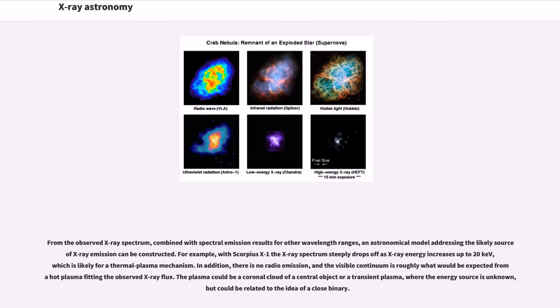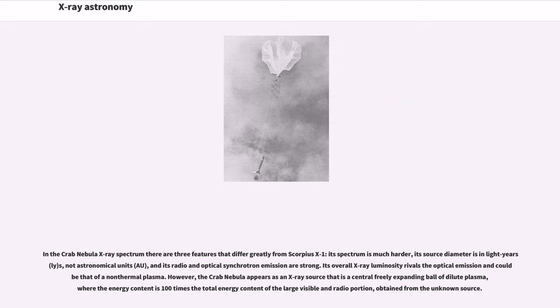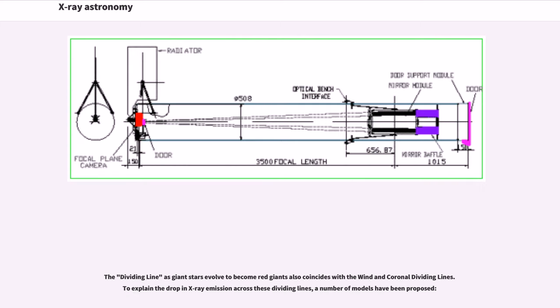With Scorpius X-1 the X-ray spectrum steeply drops off as X-ray energy increases up to 20 kiloelectron volts, which is likely for a thermal plasma mechanism. The plasma could be a coronal cloud of a central object or a transient plasma, where the energy source could be related to the idea of a close binary. In the Crab Nebula X-ray spectrum there are three features that differ greatly from Scorpius X-1: its spectrum is much harder, its source diameter is in light years not astronomical units, and its radio and optical synchrotron emission are strong. The Crab Nebula appears as an X-ray source that is a central freely expanding ball of dilute plasma.